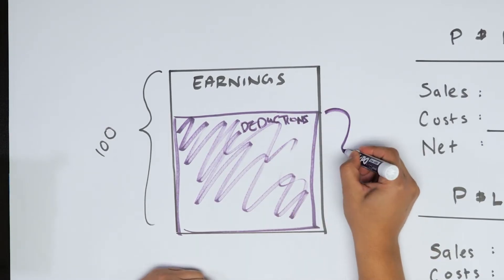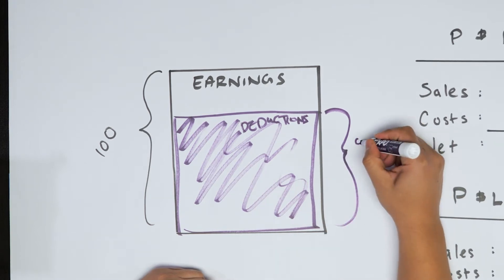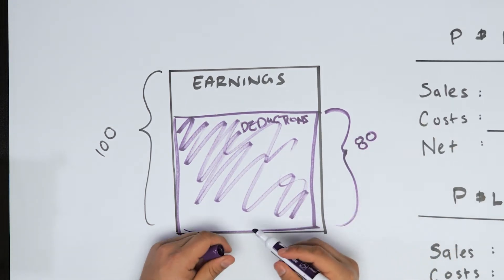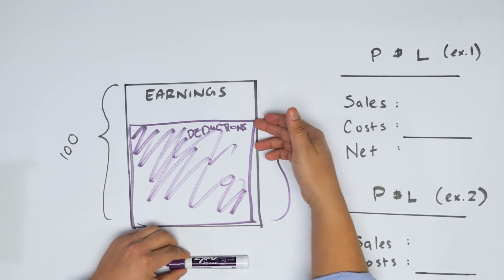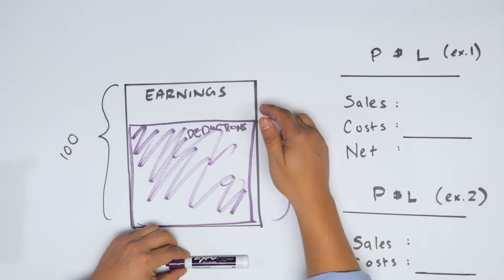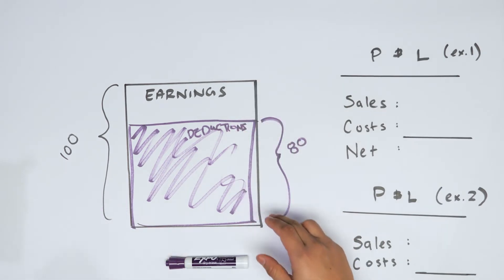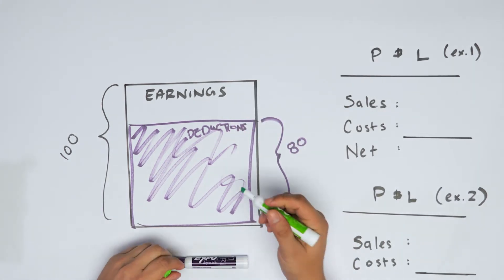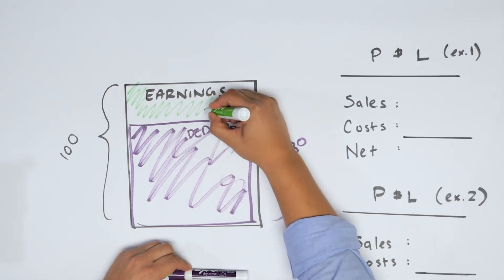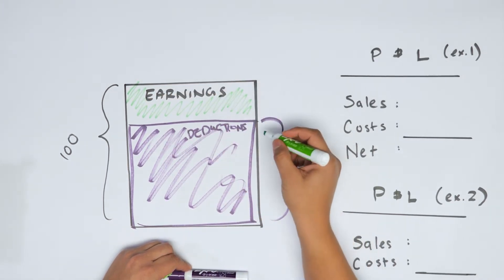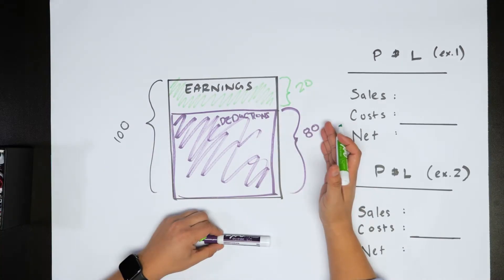Let's say that our deductions or costs are going to be 80. And then we ask, well, where's the net? So in this case, we have more earnings than deductions. You can see the top line of deductions and the top line of earnings, and this is going to be our net profit. So I'm going to use the color green to denote that things are good. And this is where our net is going to fall. So as you can see here, we've got our net profit of 20 and we have deductions of 80.